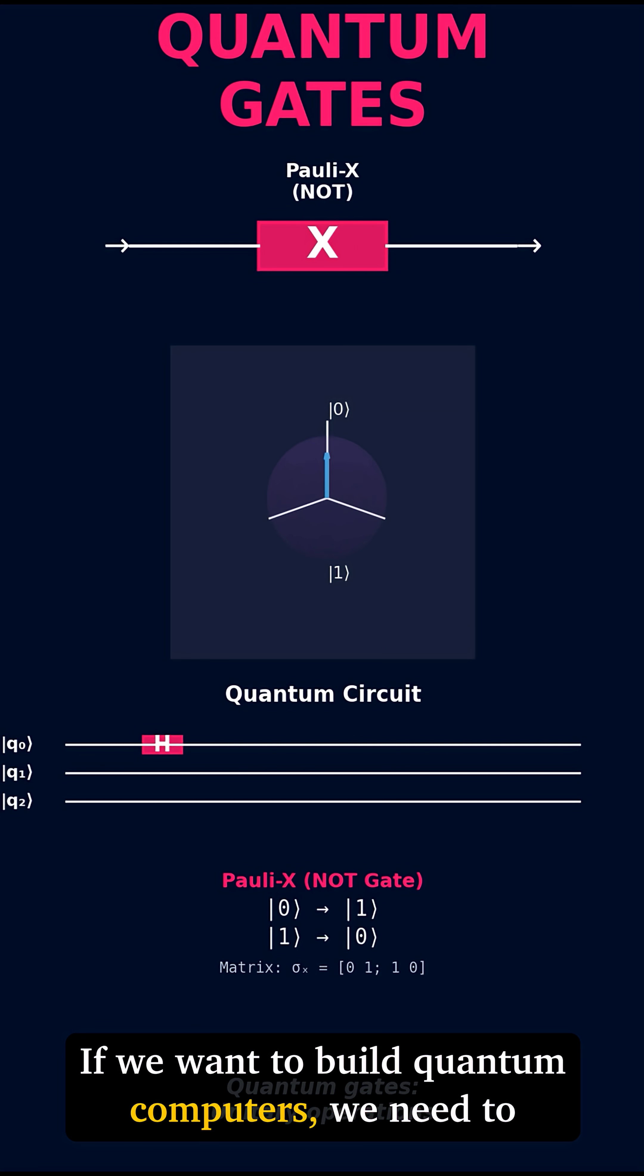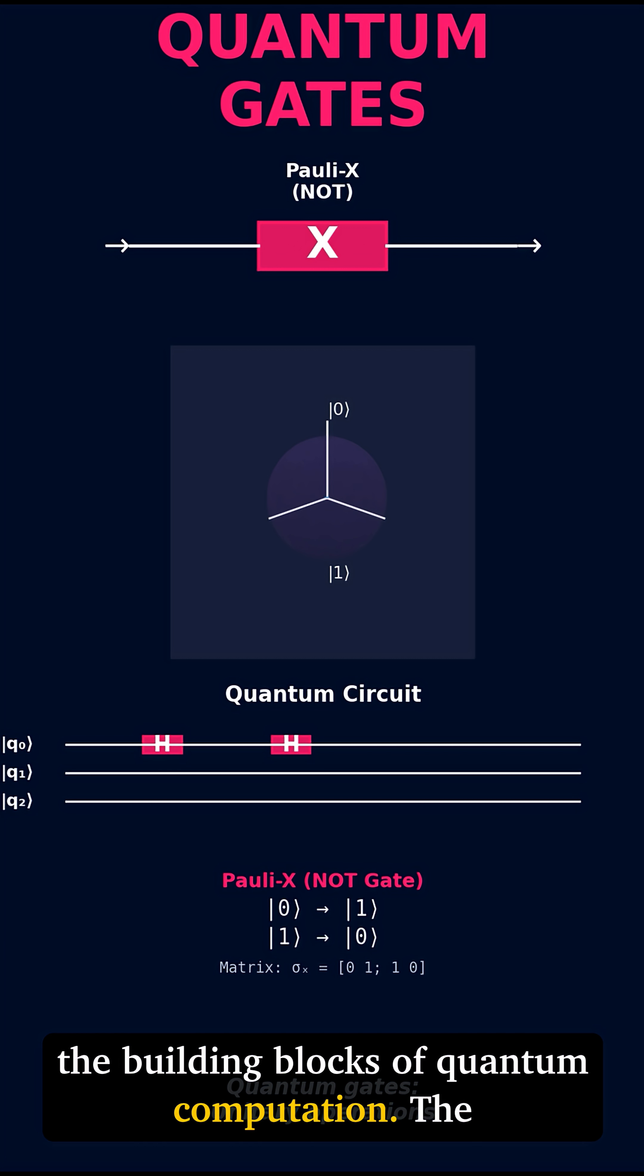If we want to build quantum computers, we need to control qubits. That's where quantum gates come in, the building blocks of quantum computation.